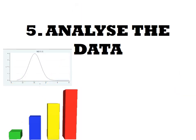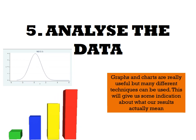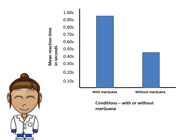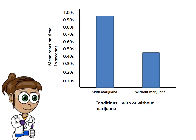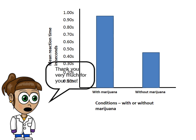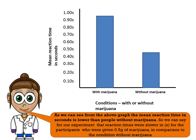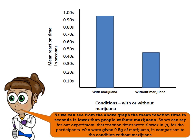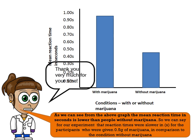The next thing is to analyse our data once we have it. Graphs and charts are really useful, and there are many different techniques we can use in psychology to indicate what our results actually mean. Looking at our bar chart, we have mean reaction time in seconds on one axis and the two conditions — with or without marijuana — on the other axis. From the graph, the mean reaction time in seconds is lower for people in the condition without marijuana. So we can say reaction times were slower in seconds for participants given 0.5 grams of marijuana in comparison to the condition without marijuana.